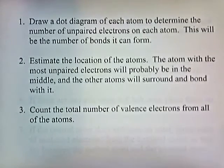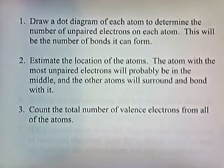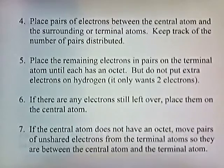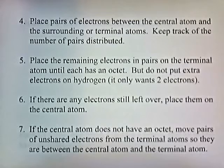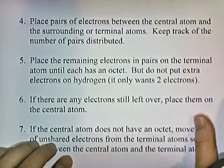This procedure works with simple molecules, but it's helpful to use another procedure when molecules become more complicated. The following procedure works for both simple and complicated molecules. Draw a dot diagram of each atom to determine the number of unpaired electrons — this is the number of bonds it can form. Estimate atom locations: the atom with the most unpaired electrons is probably in the middle, surrounded by the others. Count the total valence electrons from all atoms. Place pairs of electrons between the central atom and the terminal atoms. Place remaining electrons on terminal atoms until each has an octet, but do not put extra electrons on hydrogen. If electrons remain, place them on the central atom. If the central atom lacks an octet, move unshared pairs from terminal atoms to between the central and terminal atoms.